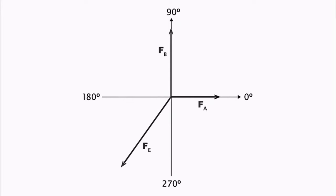Using the experimental values of the magnitude and direction of the equilibrium force, calculate and record experimental values for the magnitude and direction of the resultant force. The magnitude of the resultant force will be the same as the magnitude of the equilibrium. The direction of the resultant will be 180 degrees from the direction of the equilibrium.